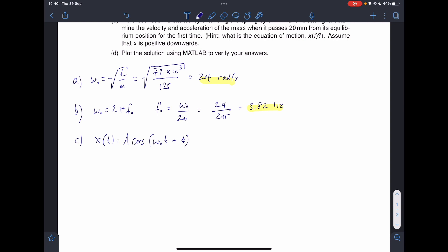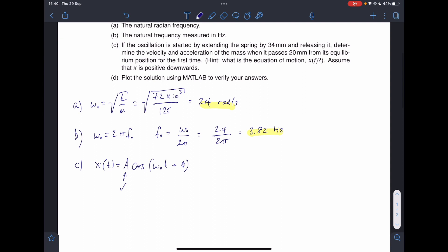Now, we know A, because it says we shift the mass, we extend it to 34 millimetres, which happens to be the amplitude. We know the frequency, because we calculated it. Now, for this value, let's think about what the shape looks like. X of t, this is time. When t equals 0, this equation reduces to A cosine of phi.